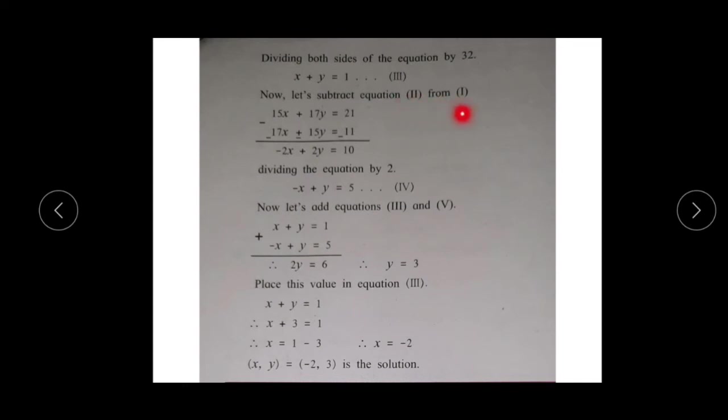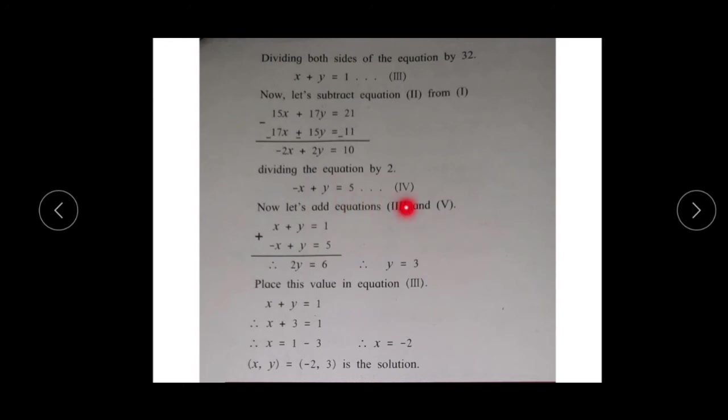Now subtract equation 2 from equation 1. When subtracting, always change the sign of each term in the second equation — so minus, minus, and minus. You get 15x - 17x = -2x, 17y - 15y = +2y, and 21 - 11 = +10. These numbers are divisible by 2, so dividing by 2 gives -x + y = 5. Give this as equation number 4.